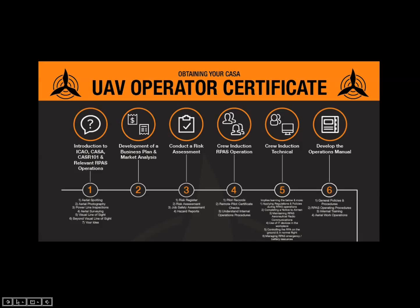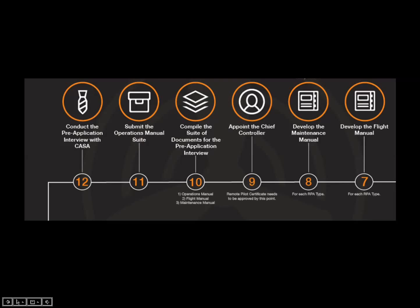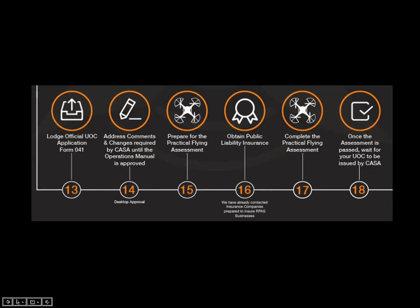The operations manual also covers internal training within the organization and aerial work operations. In addition, you need to develop a flight manual and a maintenance manual for each aircraft type, and appoint a chief controller to look after other pilots. Once all this paperwork is done, you submit it for a pre-application interview with CASA, who give feedback and prepare you for your practical assessment. CASA will turn up, assess practical flying and how your operations compare with your operations manual. Once passed, you wait for your operator certificate to be issued.